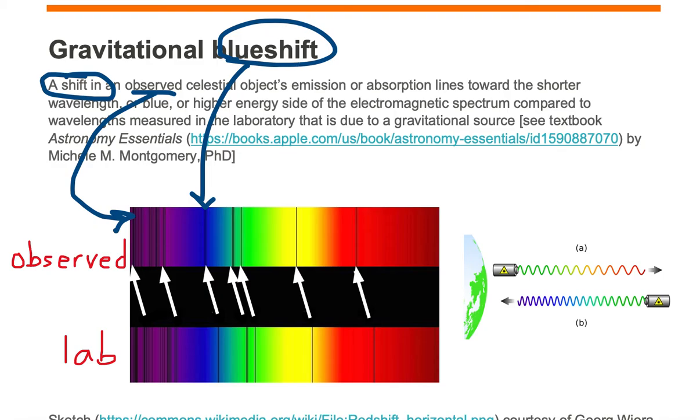The second part of this definition has the word gravitational in it. The source of the blueshift is a gravitational source. That's the second part of the definition.